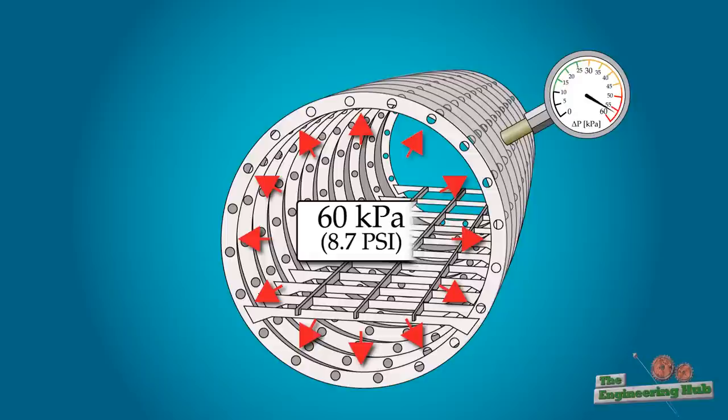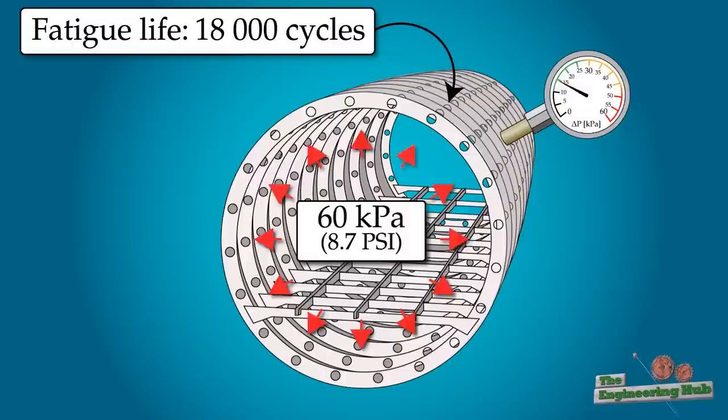To simulate these conditions, de Havilland repeatedly cycled the pressure inside the cabin from 0 to 60 kPa and then back to 0. After about 18,000 such cycles, the section failed in fatigue. But since the design life of the Comet was to be 10,000 flights, well below the 18,000 flights estimated by the test, neither the designers nor the civil aviation organization were concerned about fatigue.